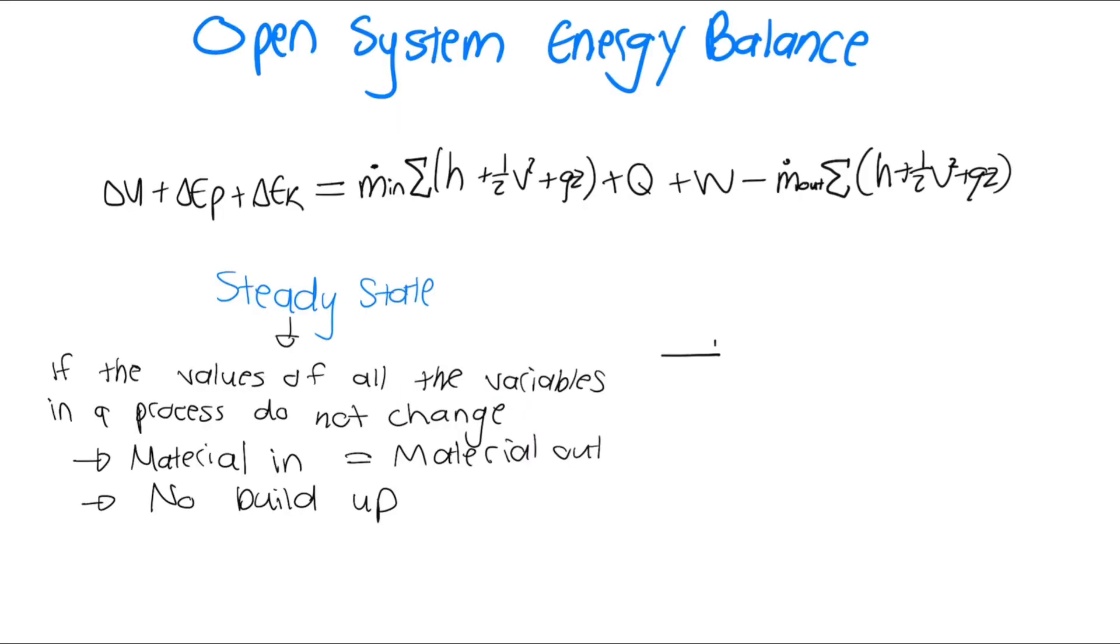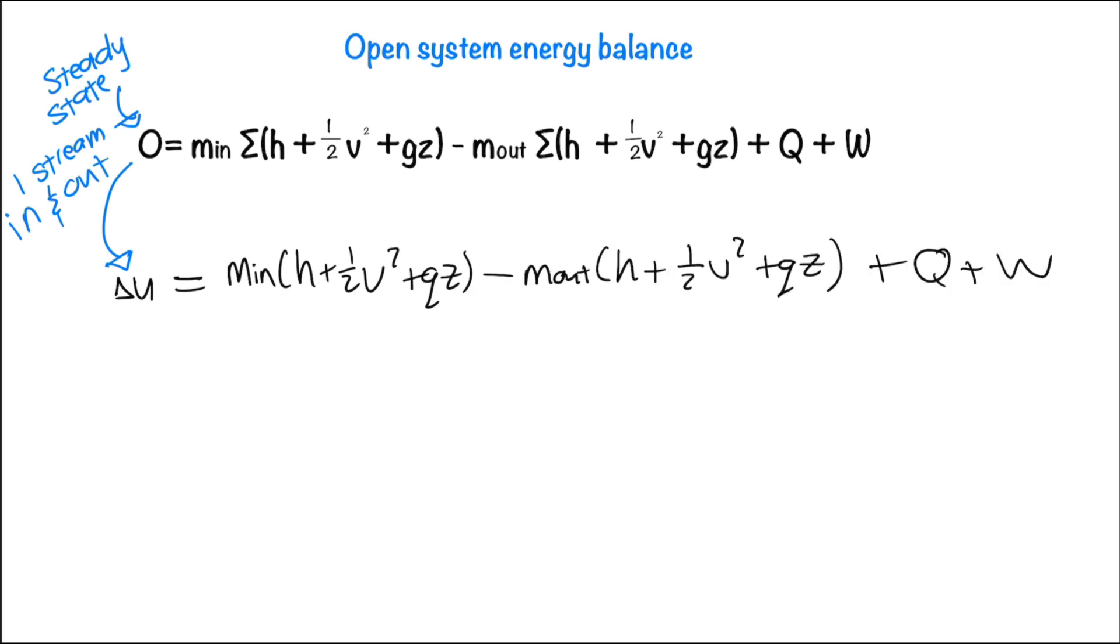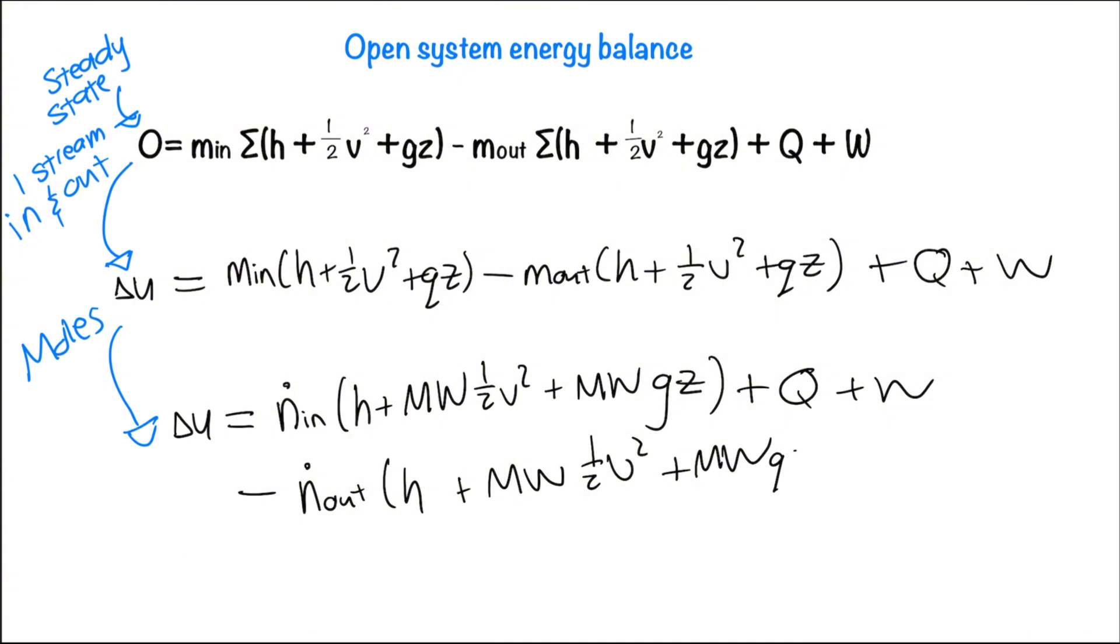In steady state processes we can simplify our energy balance since the change in internal energy is equal to zero. If there's only one stream in and one stream out we can simplify our energy balance even more since we don't have to add all the flow energy from all the different streams. We can also change our energy balance when working with moles where n is moles and mw is molar weight. Remember that we can simplify the energy balances.